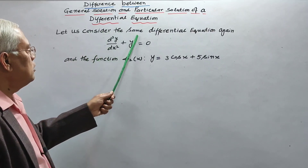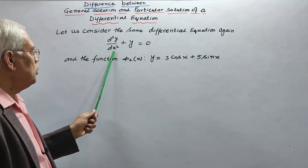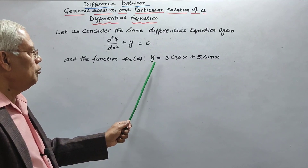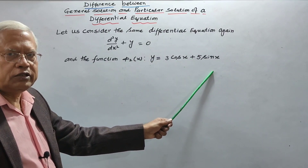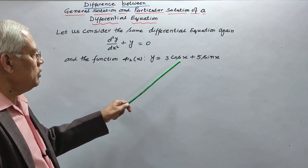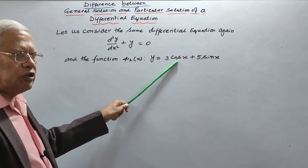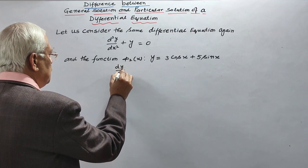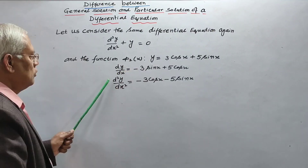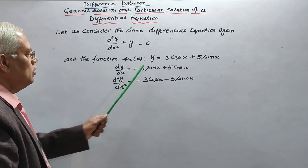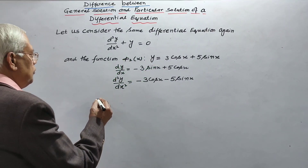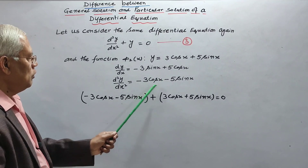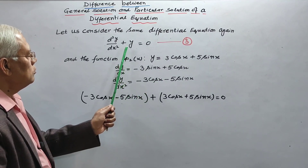Let us consider the same differential equation again: d²y/dx² + y = 0. And the function φ₂(x): y equal to 3 cos x plus 5 sin x. First of all, we will verify whether this function is a solution of this differential equation. Let us find dy/dx and d²y/dx².